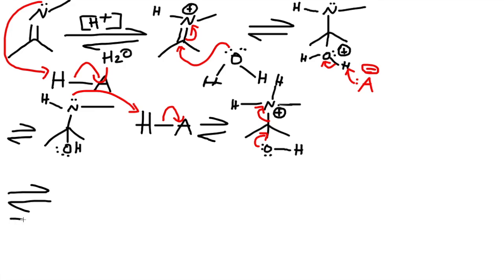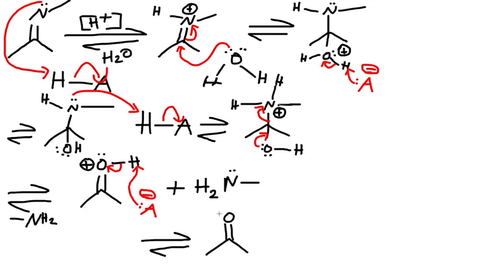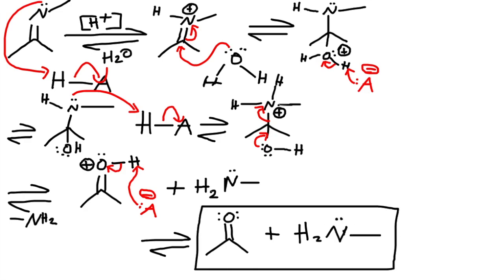We've lost NH₂ as a leaving group. We have a positive charge on oxygen, and the conjugate base comes back and grabs the hydrogen. The A⁻ comes back and gives the hydrogen off to oxygen. Our final product is the ketone plus CH₃NH₂ — and that's our answer.